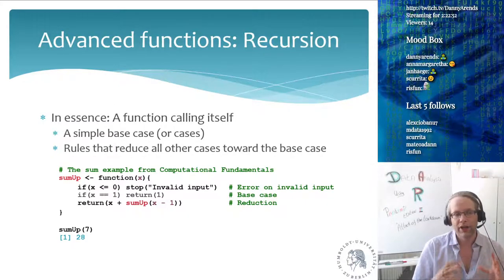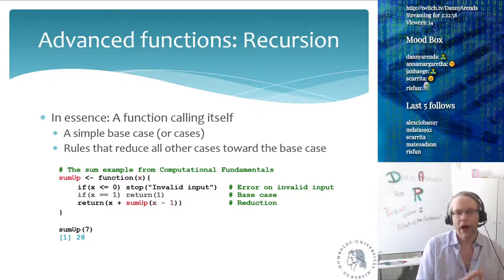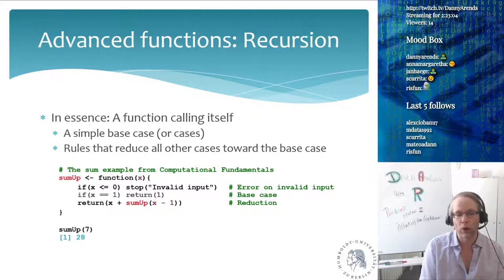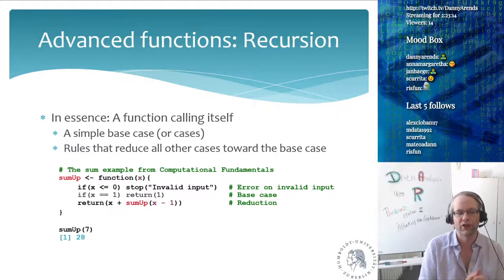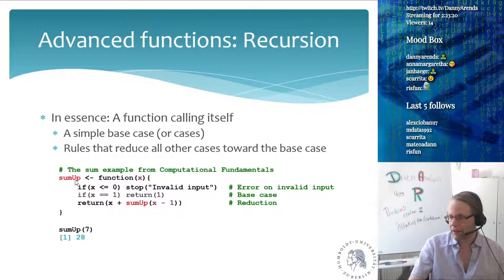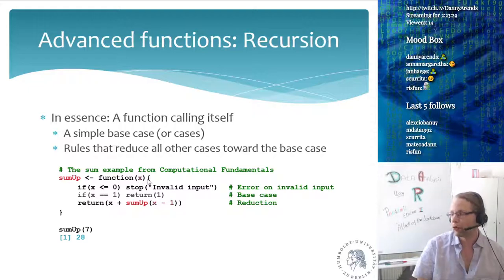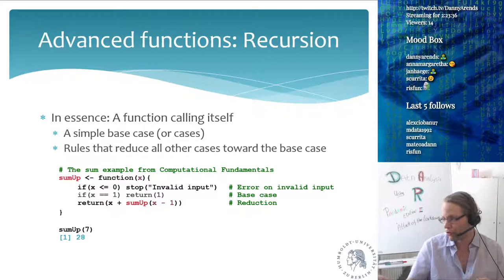More advanced functions include recursion. Recursion is essentially a function that calls itself. For recursion to work you need a simple base case where you know the answer, and all rules reduce other cases toward the base case. The sum_up example: I define a function `sum_up` which takes a single number `x` and sums up all numbers down to one. So sum_up(7) does seven plus six plus five plus four plus three plus two plus one.